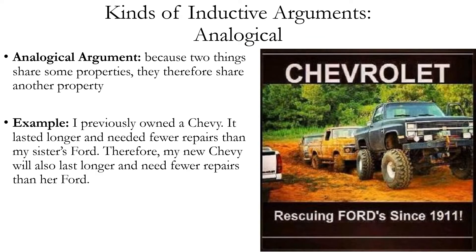Let's look at some of the kinds of inductive arguments. Once you know some of the main types, it can be easier to classify arguments as inductive. One type of inductive argument is analogical. This argument reasons that because two things share some properties, they therefore share another property. Here's an example: I previously owned a Chevy; it lasted longer and needed fewer repairs than my sister's Ford. Therefore, my new Chevy will also last longer and need fewer repairs than her Ford. The things being compared are the old Chevy and the new Chevy — they're not identical; they could even be different models, even though they have the same manufacturer. So this counts as an argument by analogy because they share some properties, but don't share all properties, and you're trying to say these two things are alike in one respect, therefore they'll be alike in another respect too.